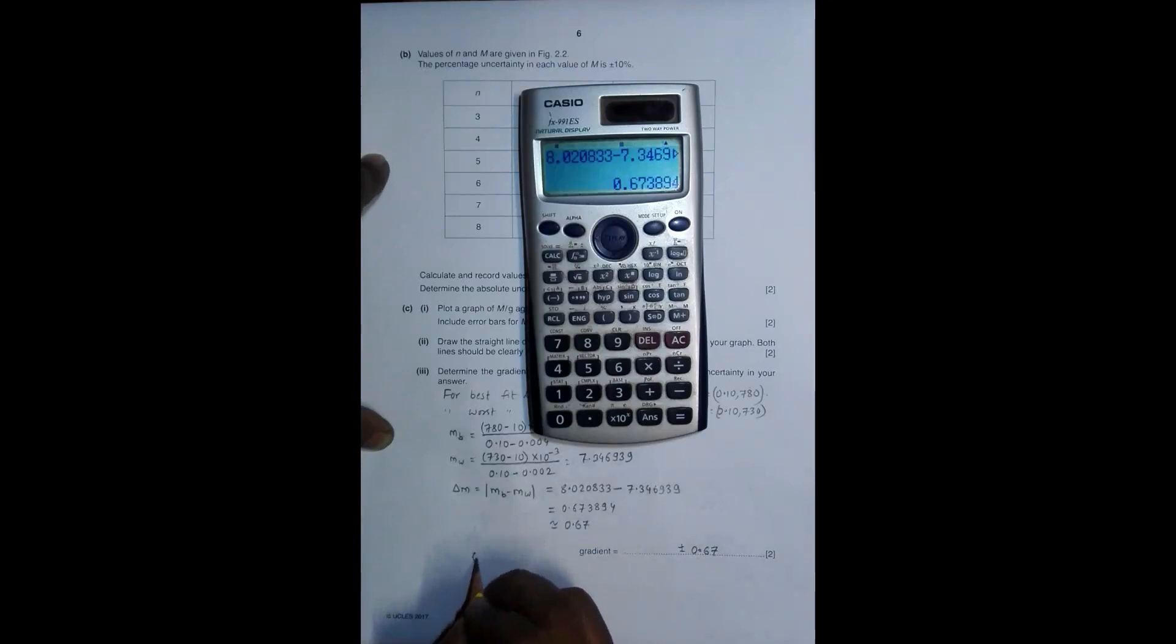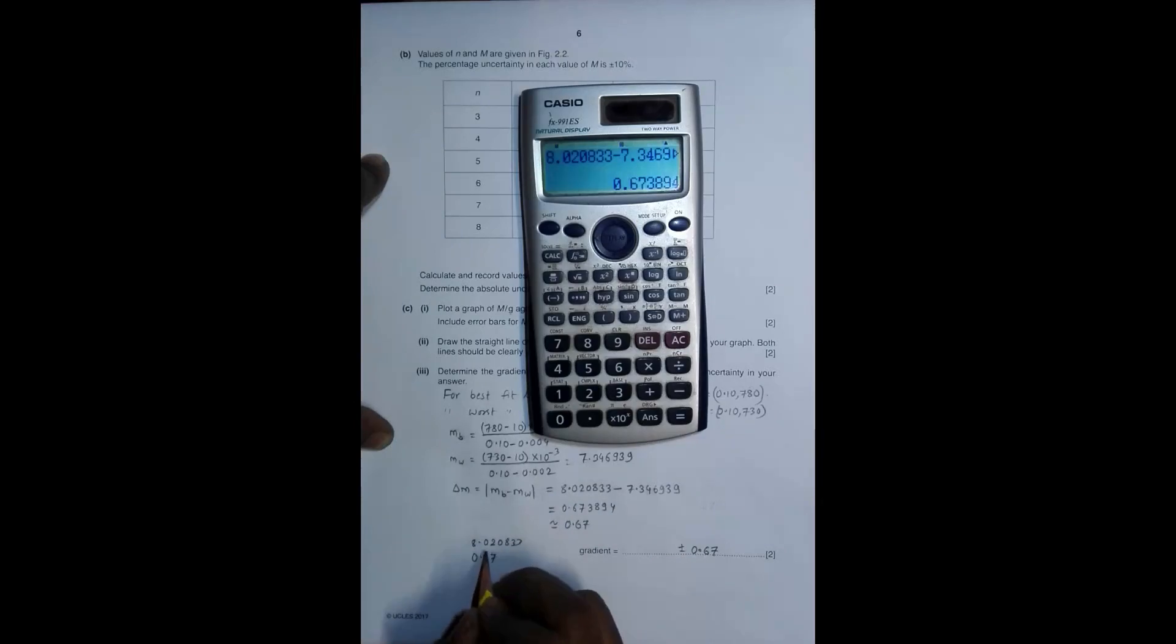Now, once I read 0.67 for this, let me write the best value here, 8.020833. So error starts from the first figure after decimal, so I can write it starts from here, so it has to end here. So it should be only 8.0.